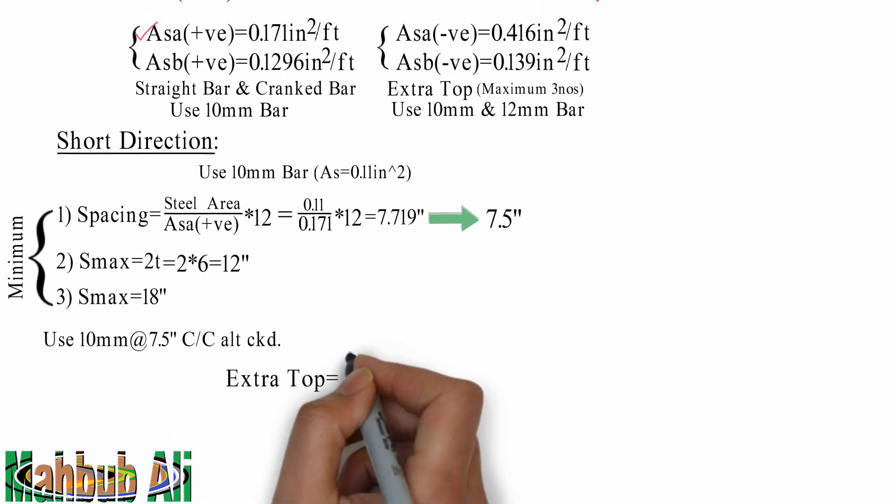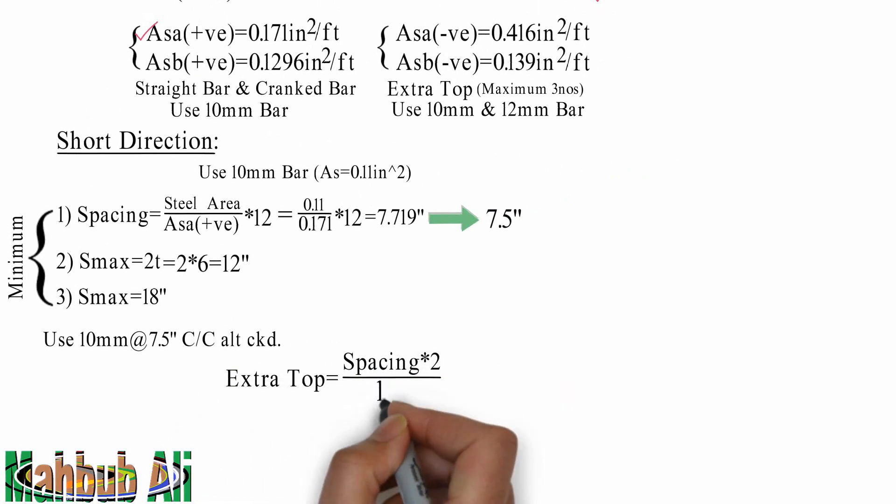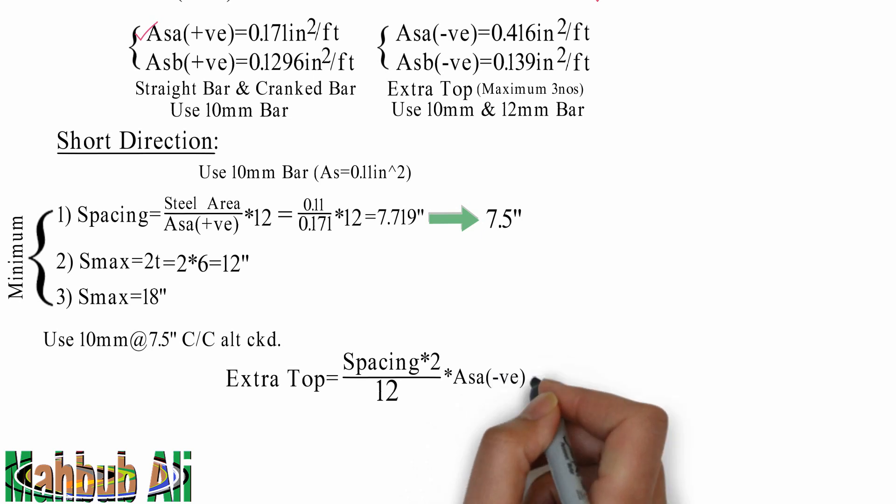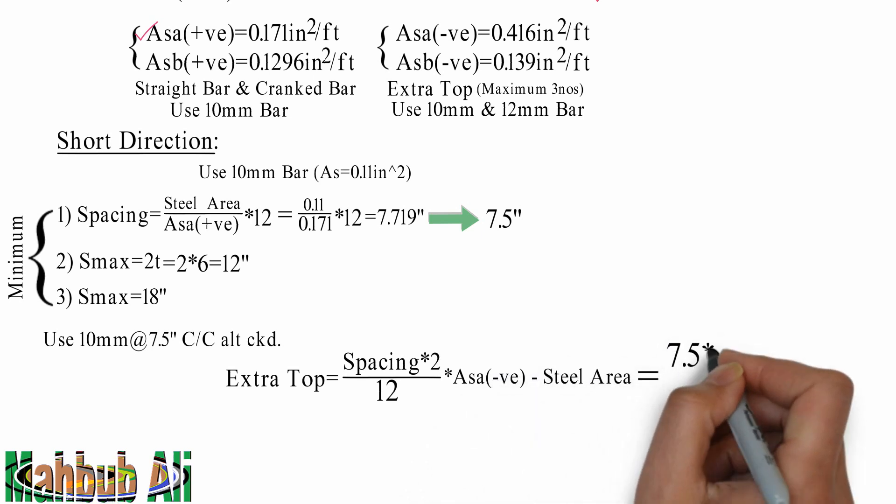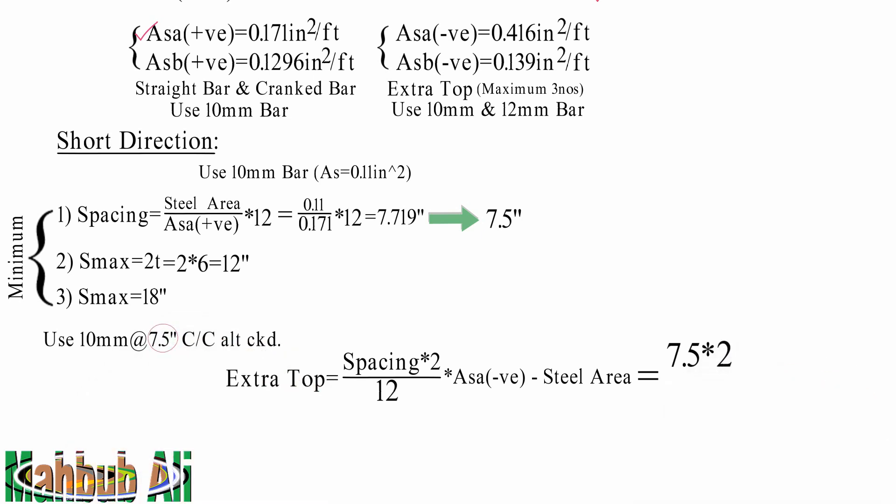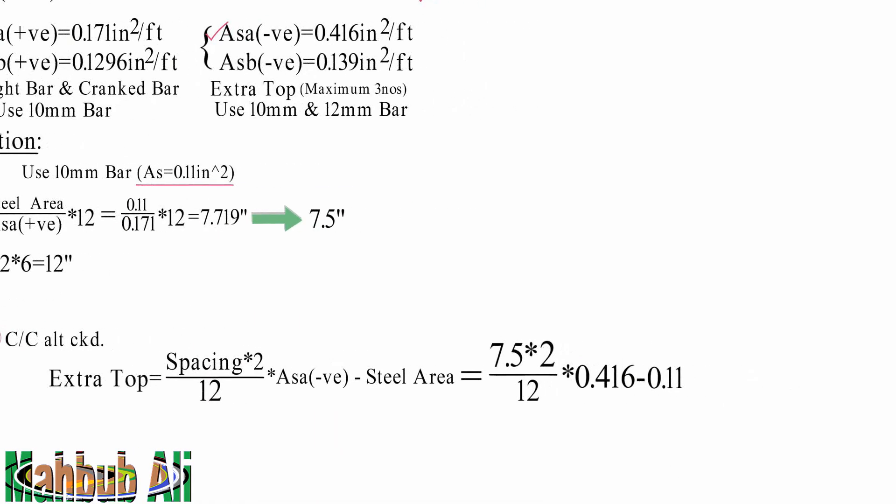Extra top equals spacing into 2 divided by 12 into AASA minus V. Steel area. Spacing 7.5 into 2 divided by 12 into AASA minus V. Steel area 0.11. Film 0.41 inch square per gap.